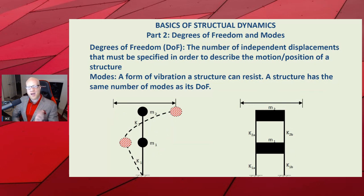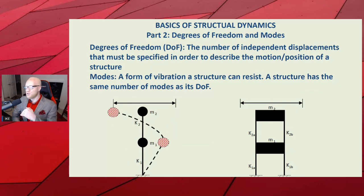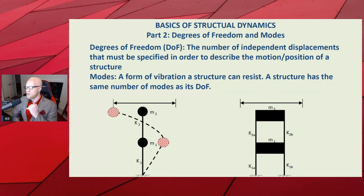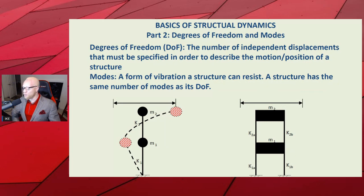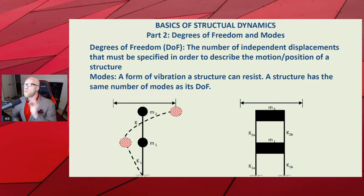The structure can also display a second shape whereby mass one goes to the left and mass two goes to the right — it can do this kind of dance. So a mode is a form or shape of vibration that a structure can resist, and a structure has the same number of modes as degrees of freedom, degrees of freedom being the number of independent displacements that must be specified in order to describe the motion and position of a structure.